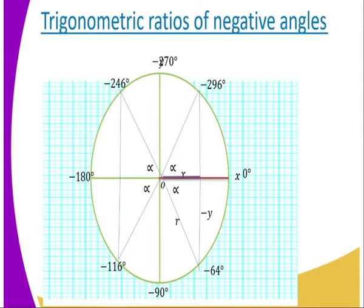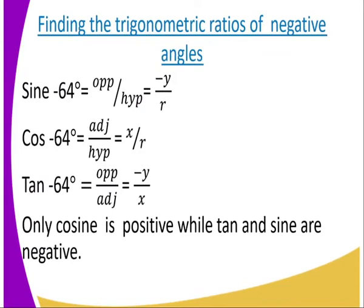Today let us use negative 64 degrees to find the trigonometric ratios. For sine(negative 64°), it is opposite over hypotenuse, equal to negative y divided by r. Tan(negative 64°) is opposite over adjacent, which gives negative y divided by x. In the fourth quadrant, only cosine is positive, while tangent and sine are negative.